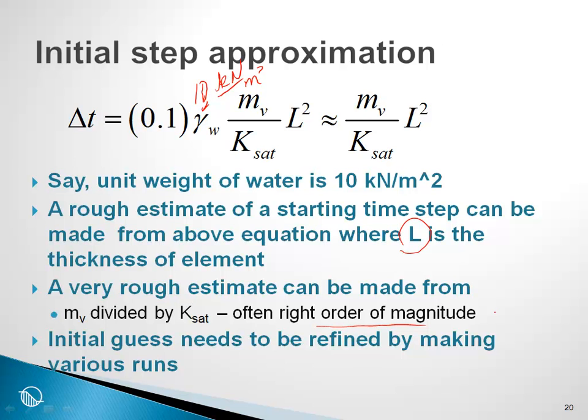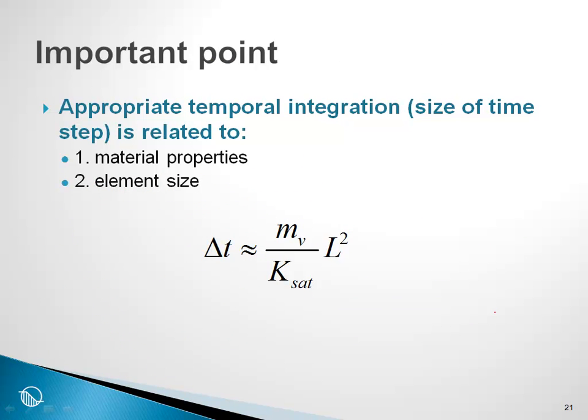In the end, the initial guess that we get from this equation needs to be refined by making various runs. The important point here is that appropriate temporal integration or size of time step is related to the material property, which is M sub V and K sat, and it is related to element size.